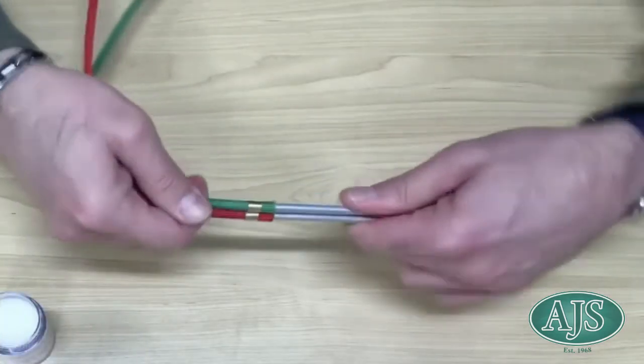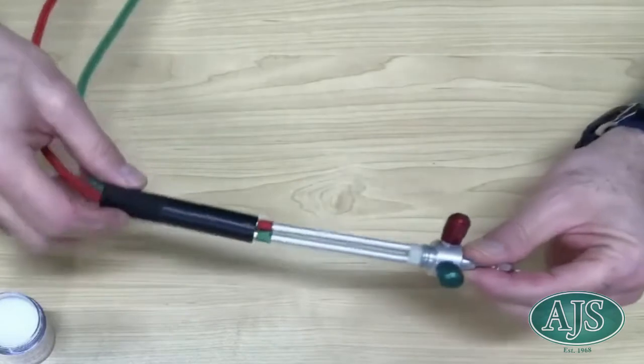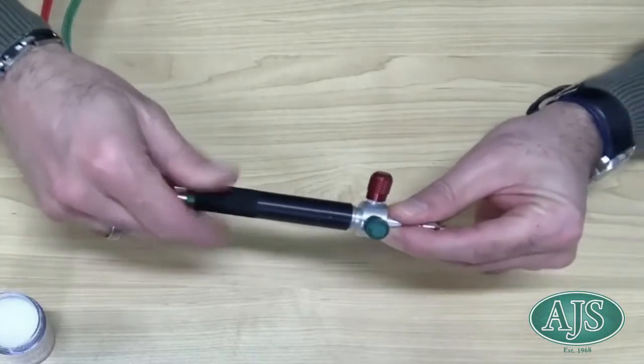With all ferrules now in place and firmly in position, the final step is to screw the handle back onto the torch body.